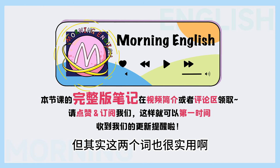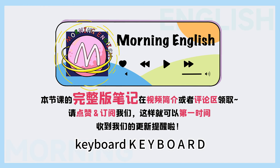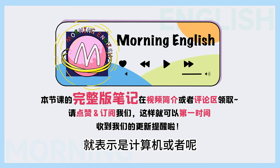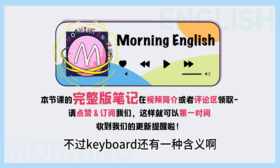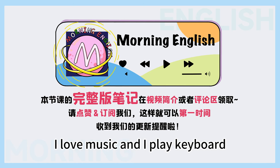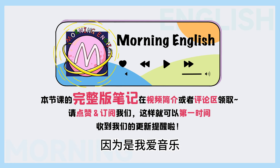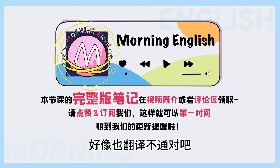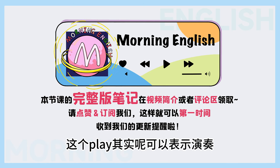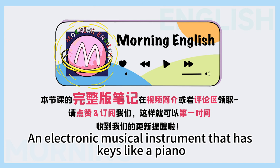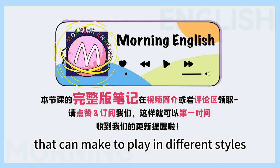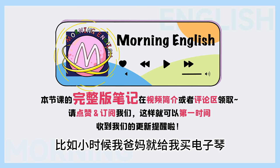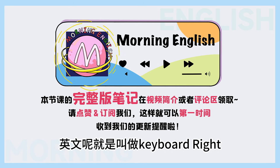是不是想到键盘和鼠标啊，但其实这两个词也很实用啊。首先就是键盘嘛，keyboard, K-E-Y-B-O-A-R-D. The set of keys for operating a computer or typewriter，就表示计算机或者打字机的这种键盘。不过keyboard还有一种含义啊，大家可以猜一猜是什么意思？I love music and I play keyboard. 因为是我爱音乐，然后也play keyboard，我们知道play可以表示演奏。Keyboard还可以表示 an electronic musical instrument that has keys like a piano that can make sounds to play in different styles or to sound like different instruments，就表示键盘式的这种电子乐器。比如小时候我爸妈就给我买电子琴，真的是学过两年啊，英文呢就是叫做keyboard.